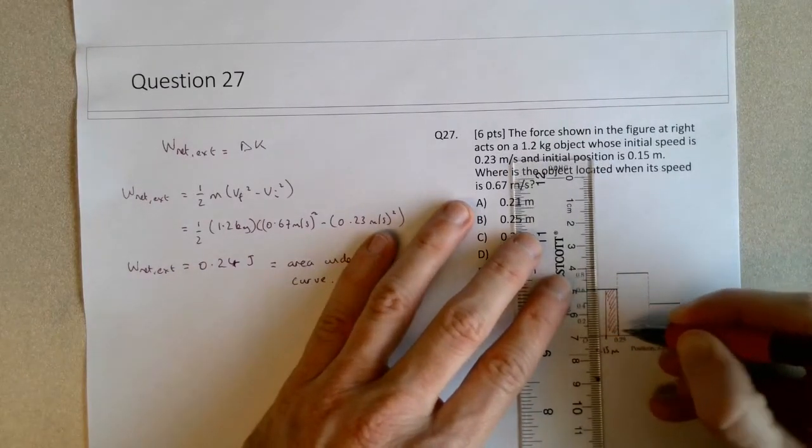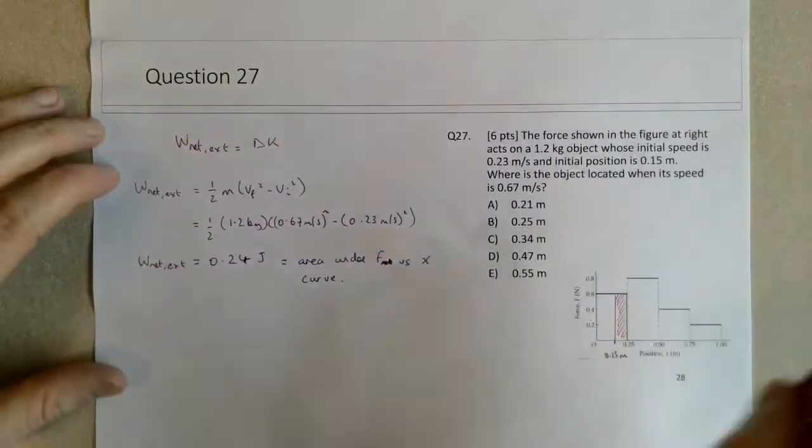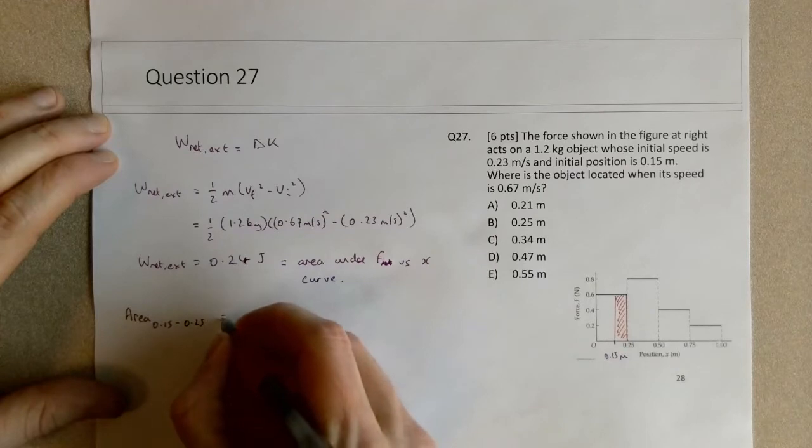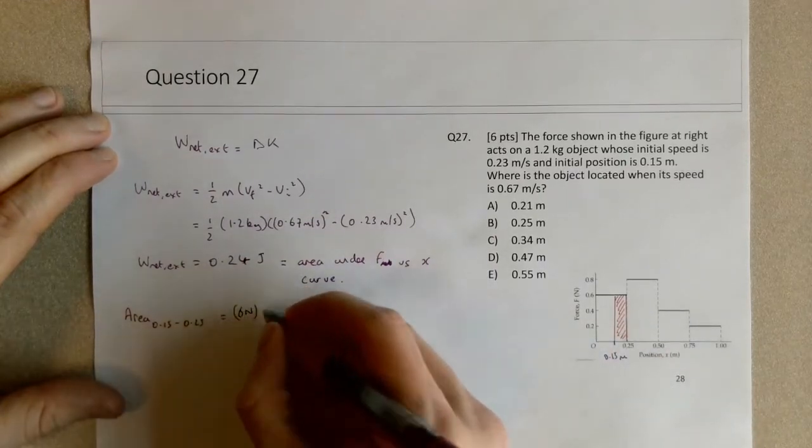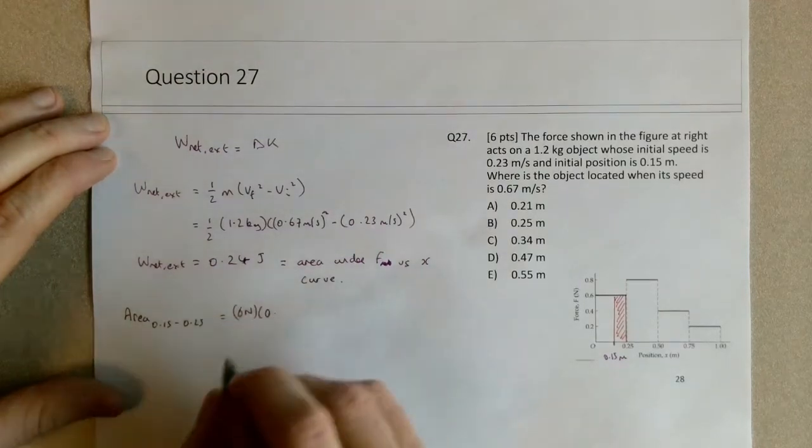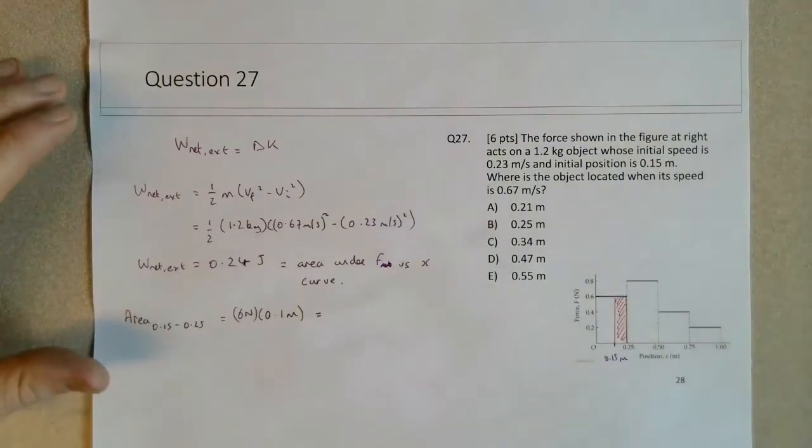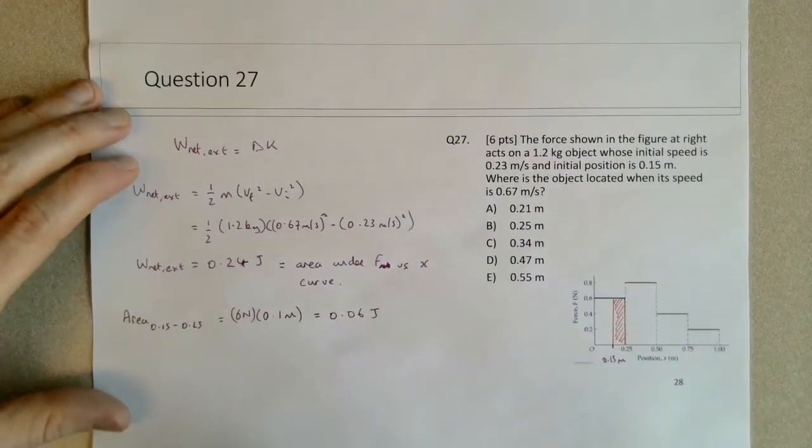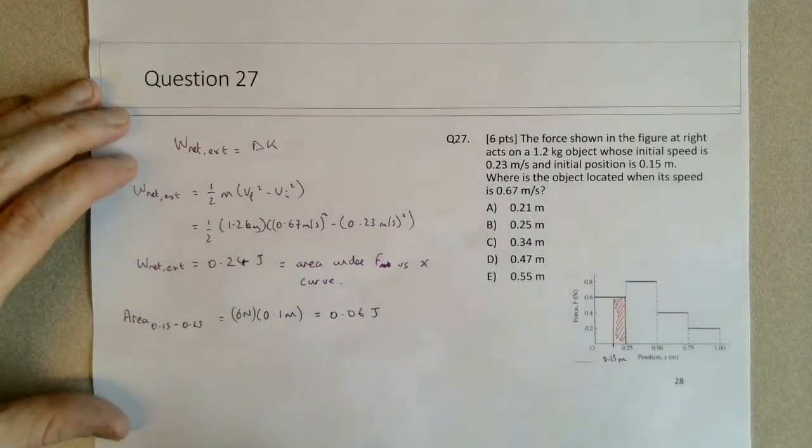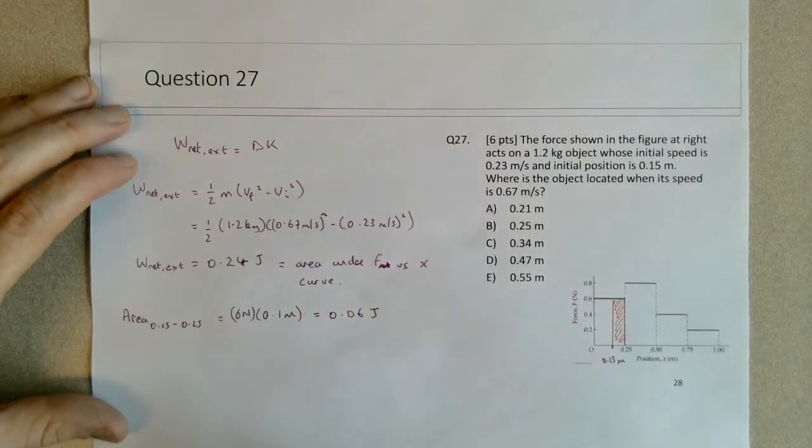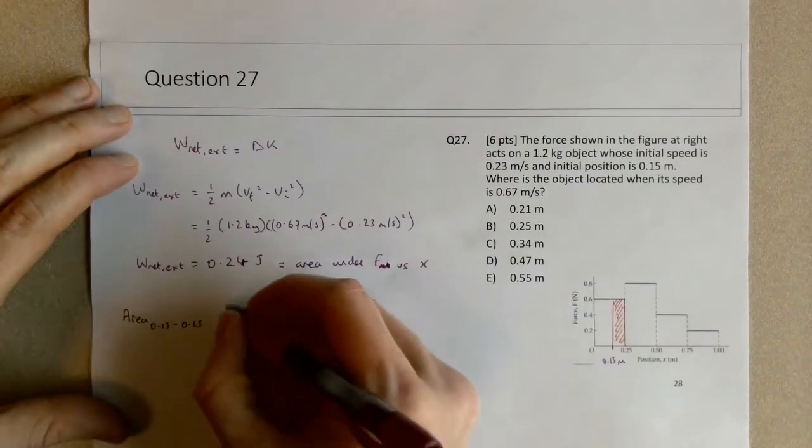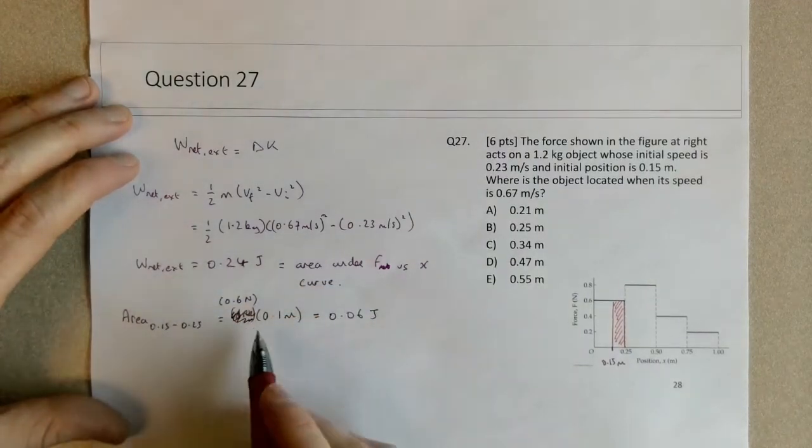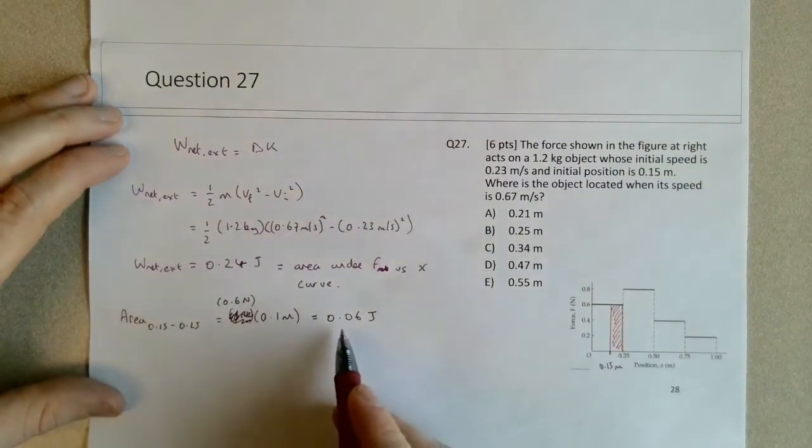I'm going to figure out what this area is first. The area from 0.15 to 0.25—oh, I made a mistake here. The force is 0.6 newtons times 0.1 meters, which gives 0.06 joules.